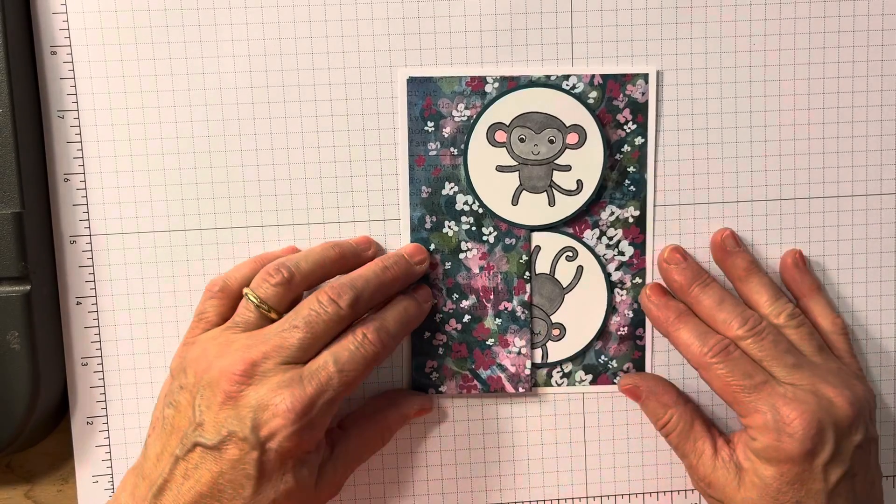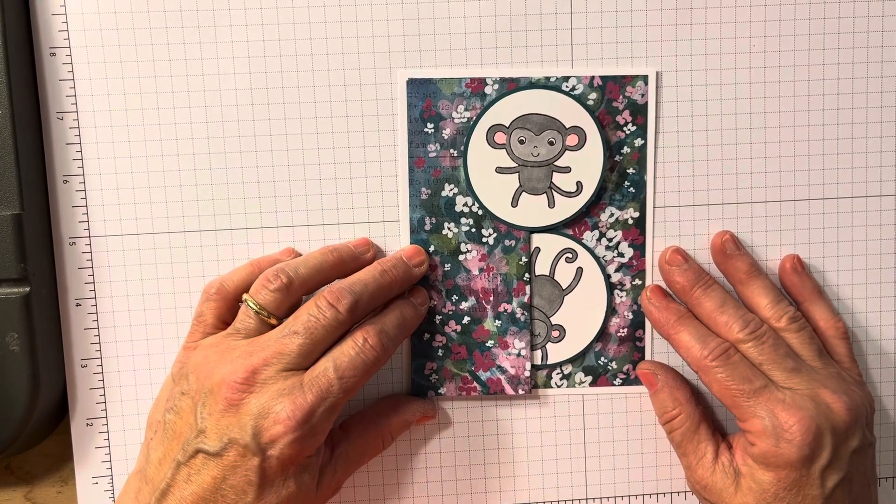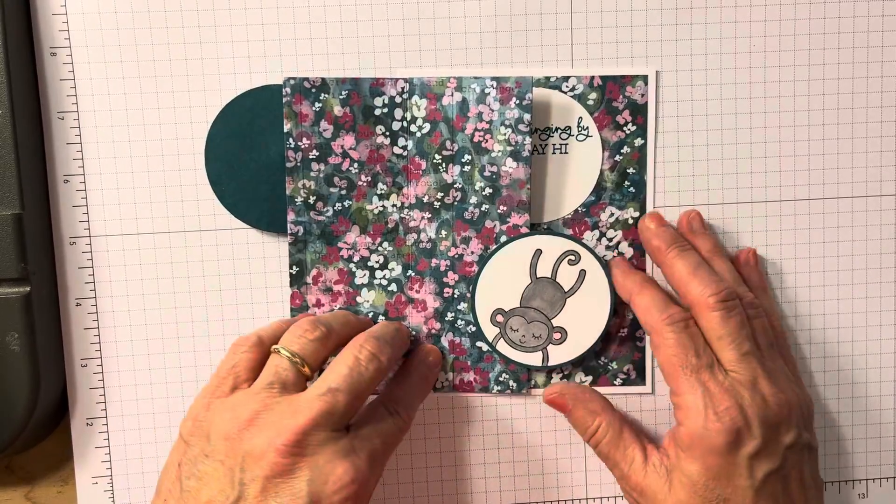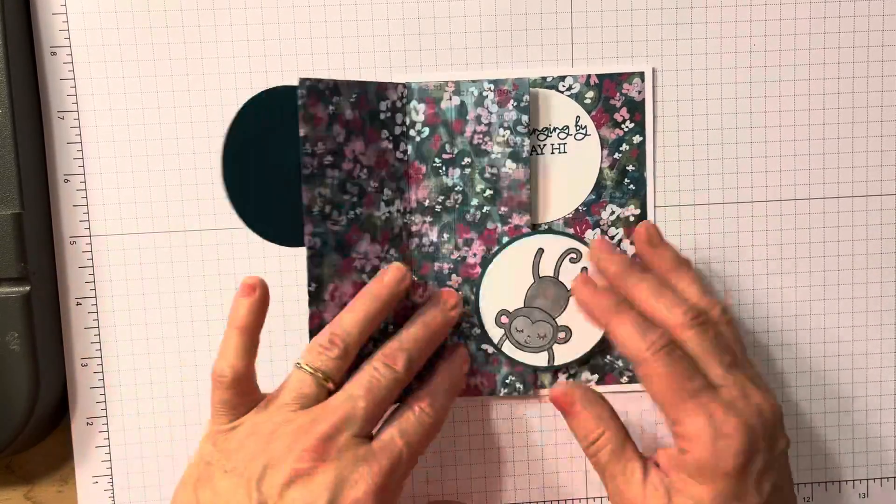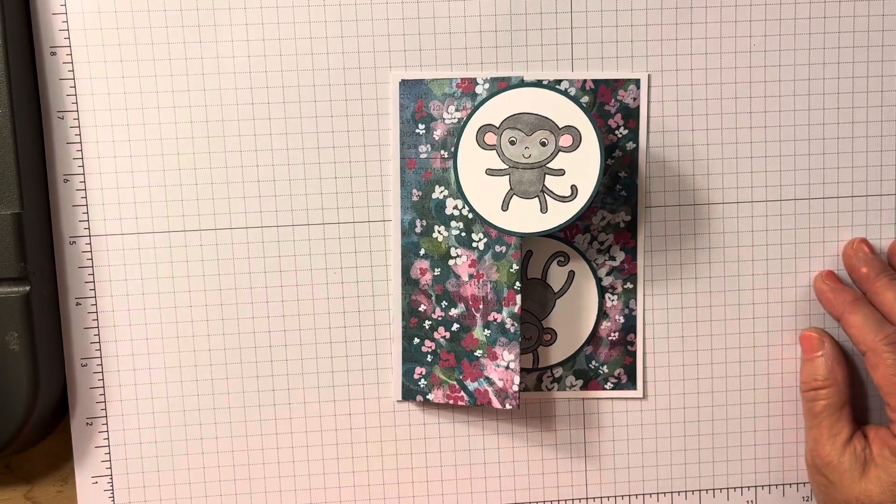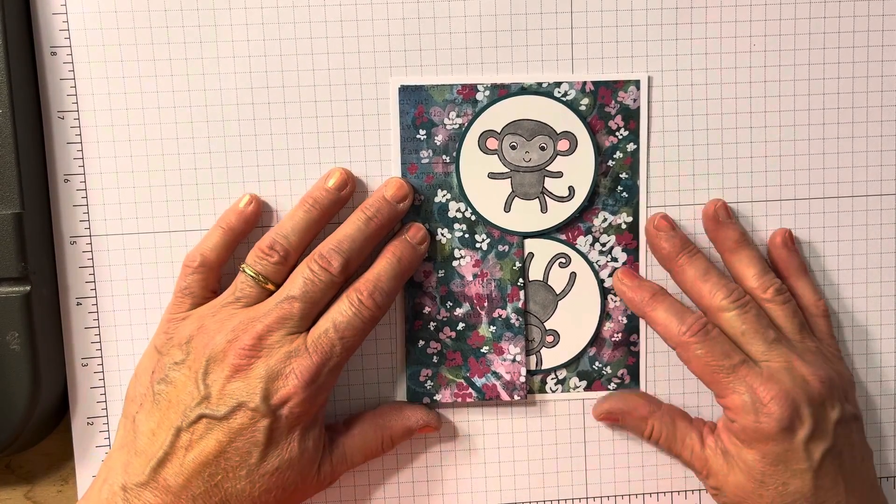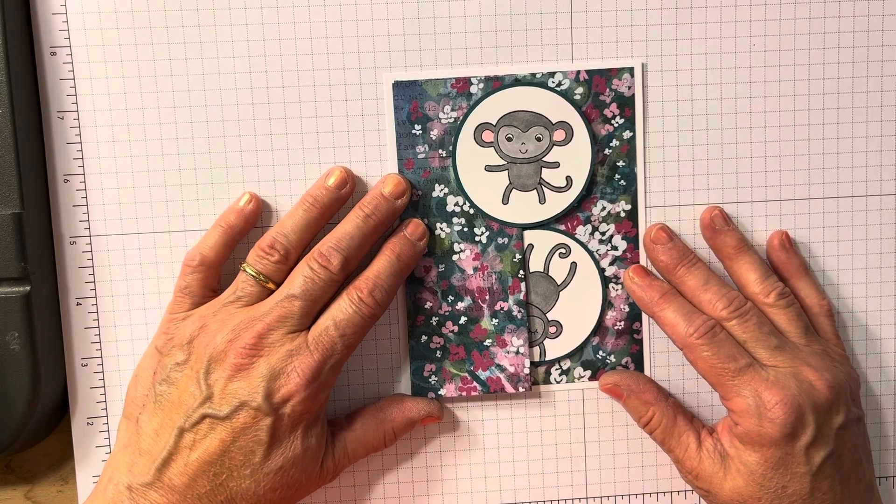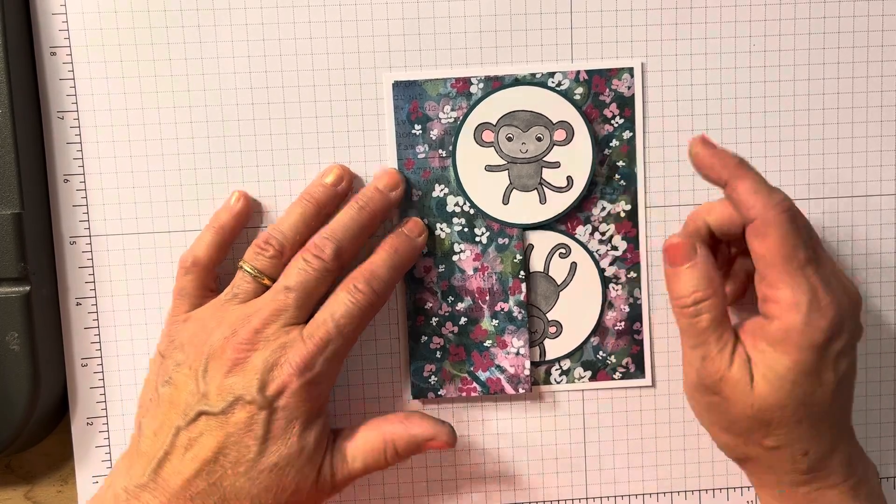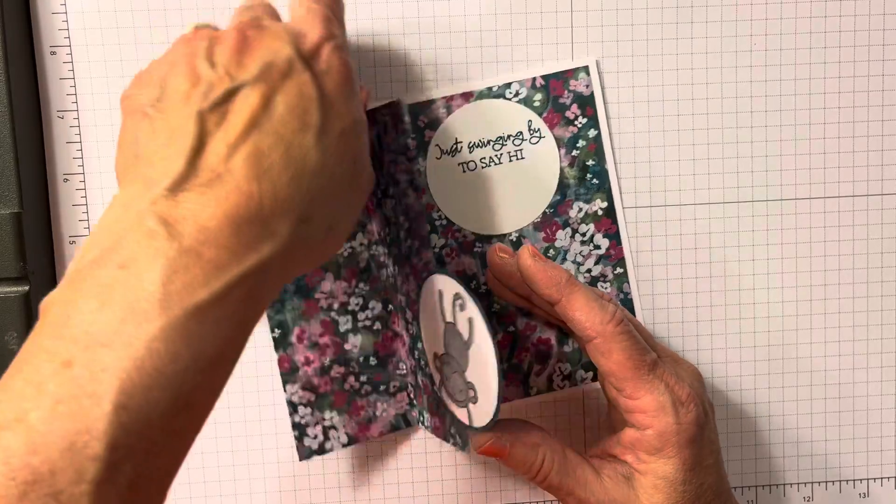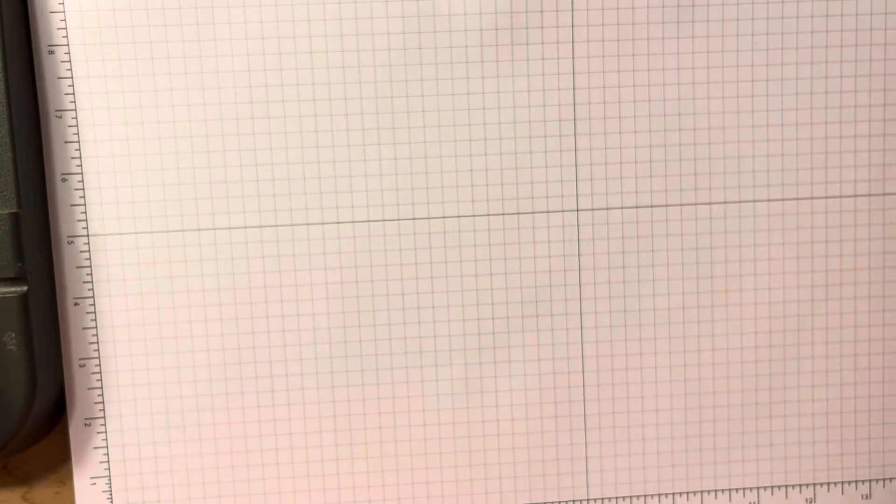What are we making today? This is a fun fold card. It's a 2468 card, and Patti Bennett designed it. I'm using different paper and monkeys and different things, but the actual design of this 2468 came from Patti. And I'm using Little Monkey Stamp Set. So, let's work and show how to make this card.